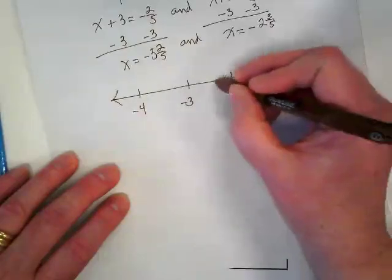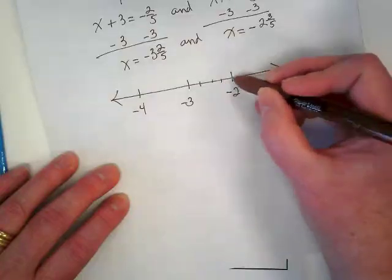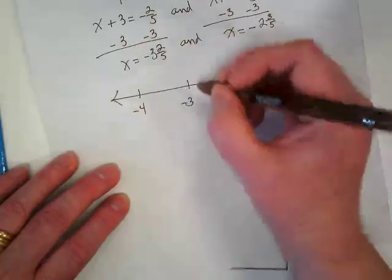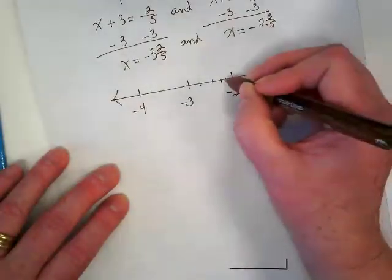Where would you put negative 2 and 3 fifths? Well, if I think about this as broken up into fifths, 1, 2 fifths, 3 fifths, I need another one. I should have spread this out better.